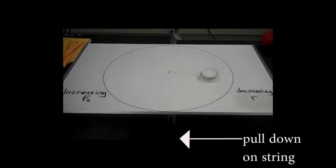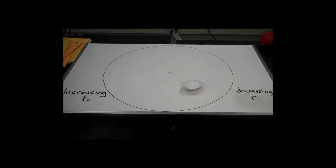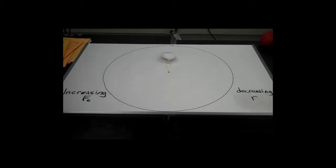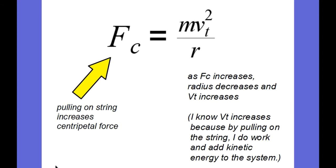This time I'm going to reach under and pull on the string, causing it to get shorter. I've increased the centripetal force, forcing the radius to get smaller. At the same time, we can see the speed of the puck is increasing. As I pull on the string, the centripetal force increases, the radius decreases, and the tangential velocity increases — because I am doing positive work and adding kinetic energy to the system.